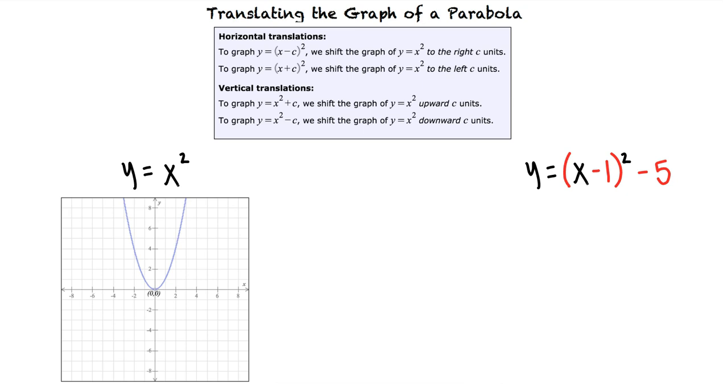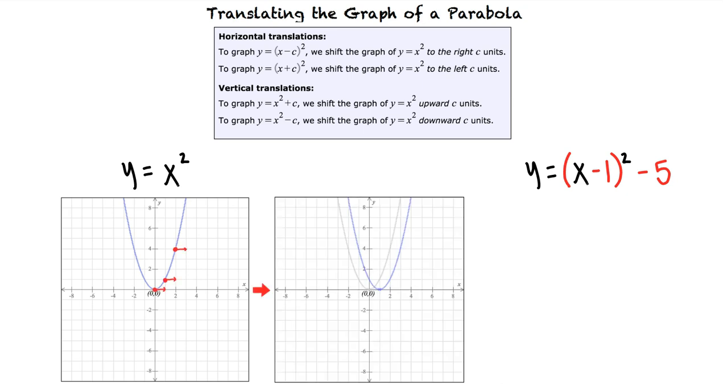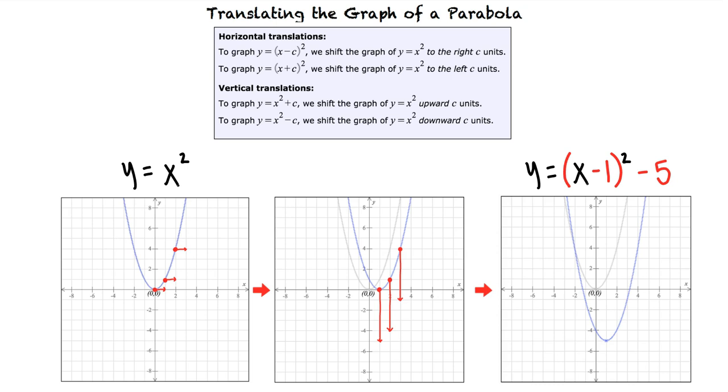our first step is to shift the graph horizontally one unit to the right. Next, since we've subtracted 5 from our function, our second step is to shift the graph vertically five units downward. Now that we've completed our two-step translation, this resulting graph is our final answer.